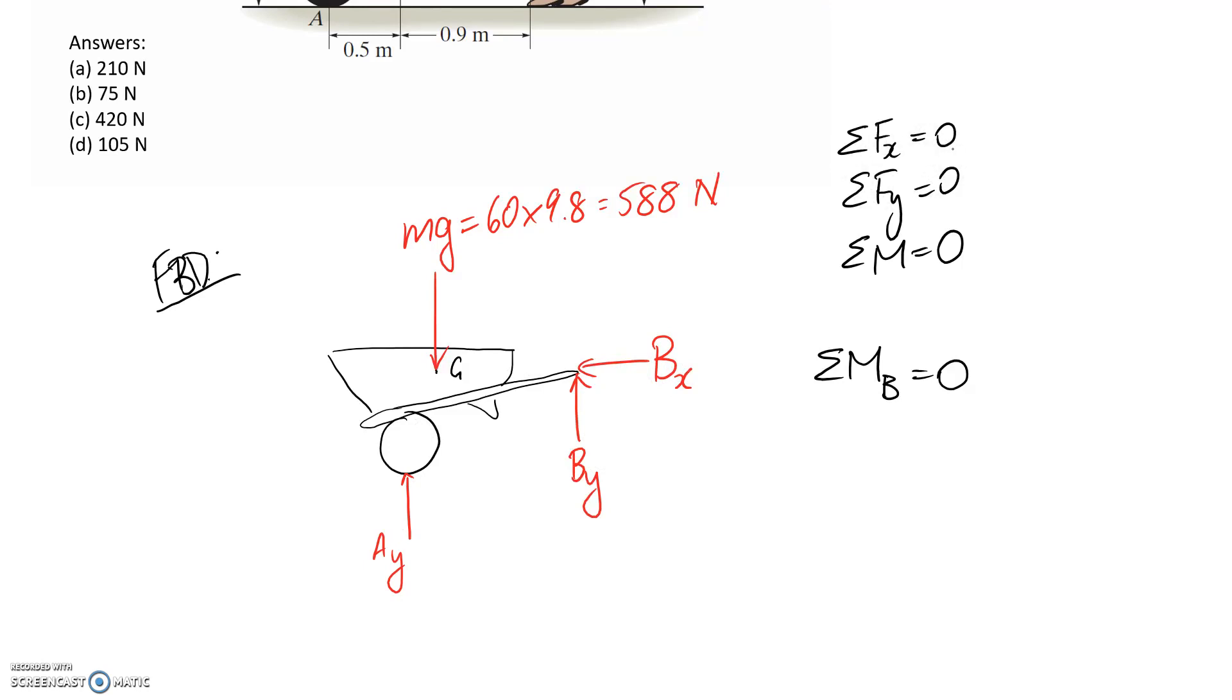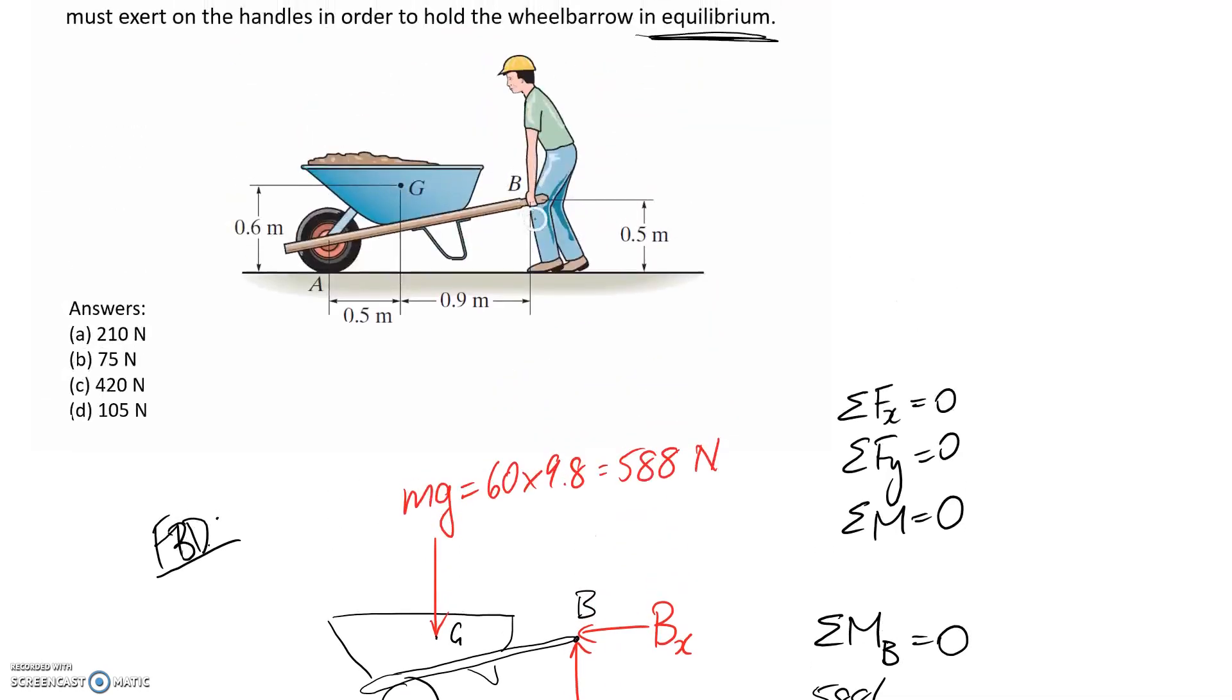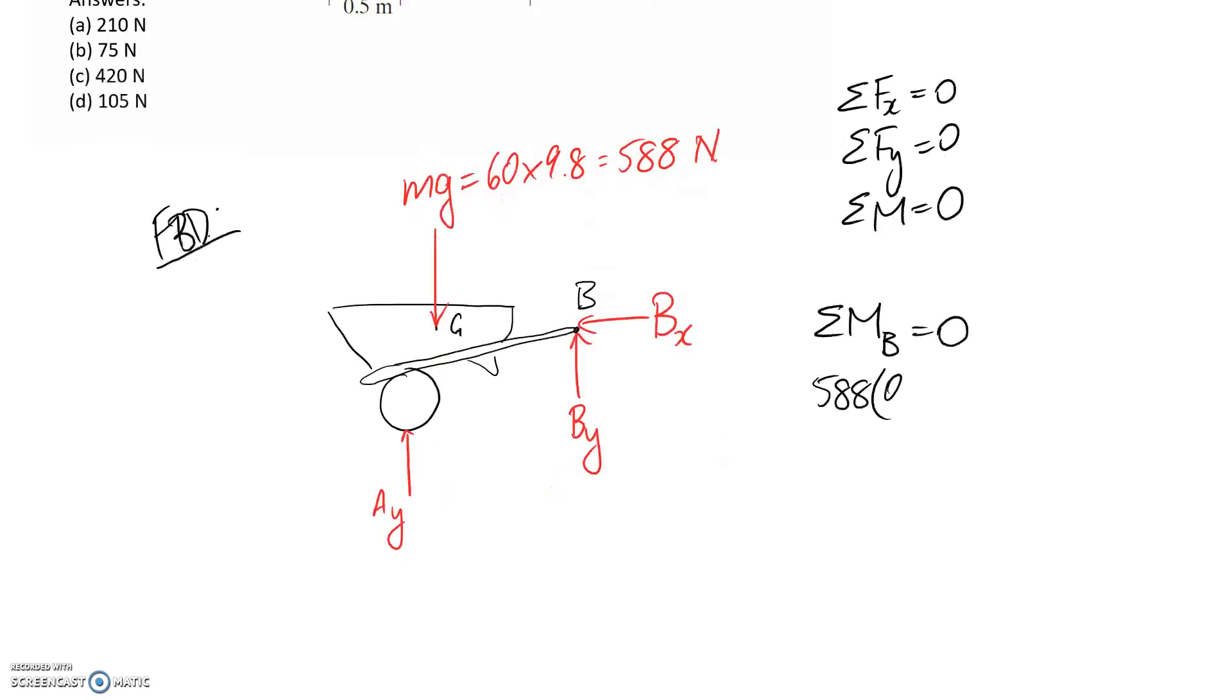Okay, so summing moments about B, we know that both of these act through the point so that means that they're not going to contribute to the equation. We now have 588 newtons acting at a distance in here which we can get from this other diagram. It's basically the distance between the handle and center of gravity which is 0.9 meters, and in terms of the direction about point B this is going to try and push us anti-clockwise so it should be positive.